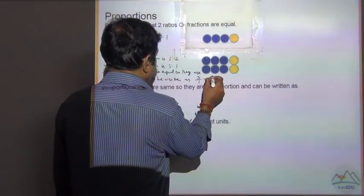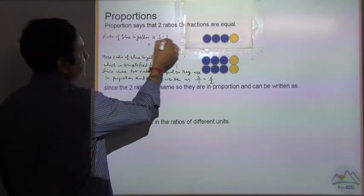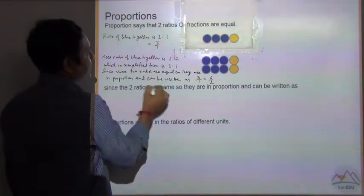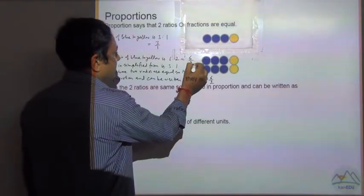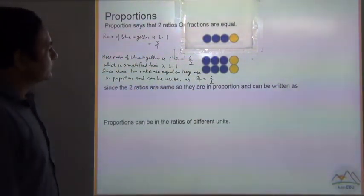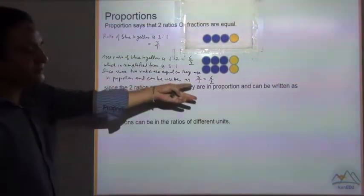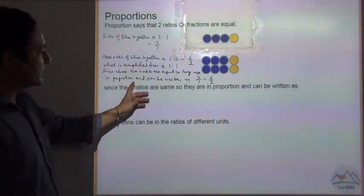3 by 1 is equal to 6 by 2. Because this ratio can also be written in fraction like this, and this can be written like this in fraction. These two fractions are equal, these two ratios are equal, their fractions are also equal, and that's why they are in proportion.